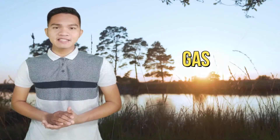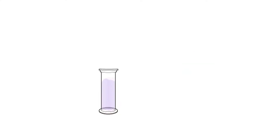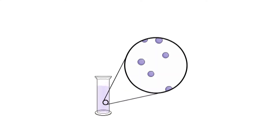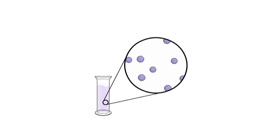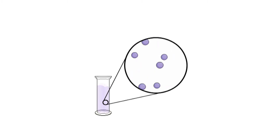Particles in gases have a large amount of energy. This means that the particles move around very quickly in all directions. They are spaced far apart in a random arrangement.